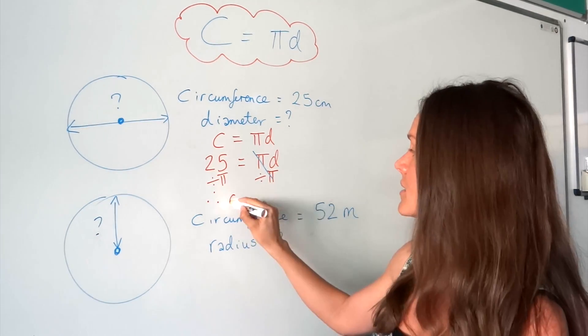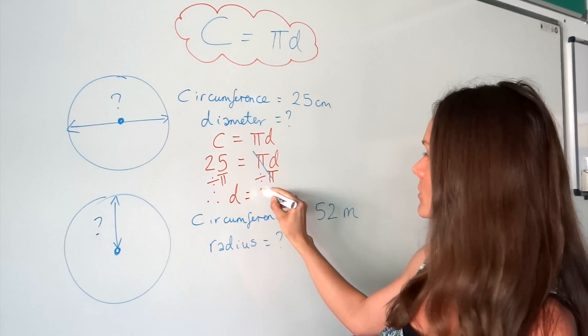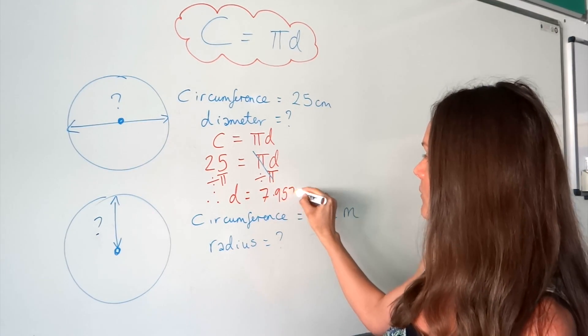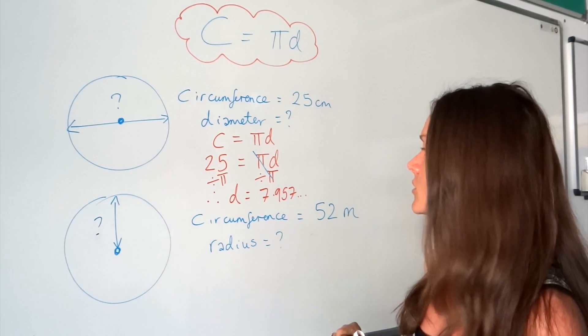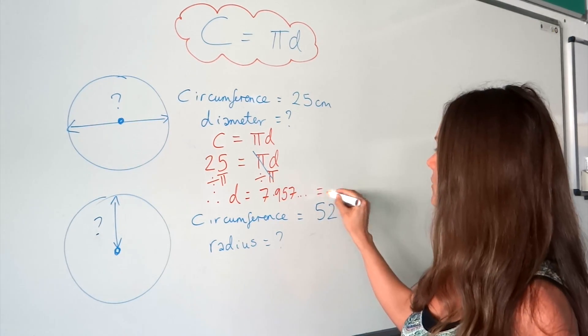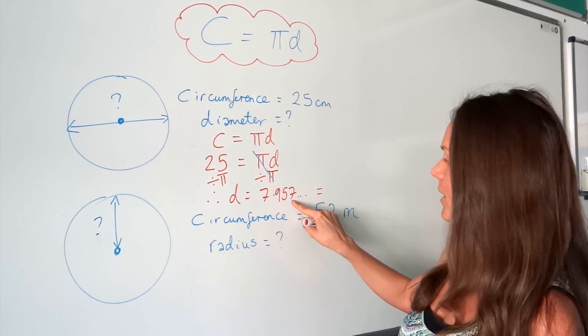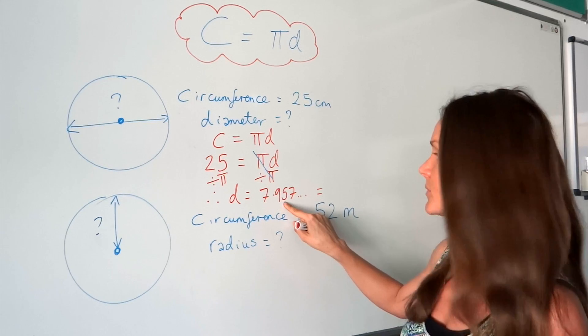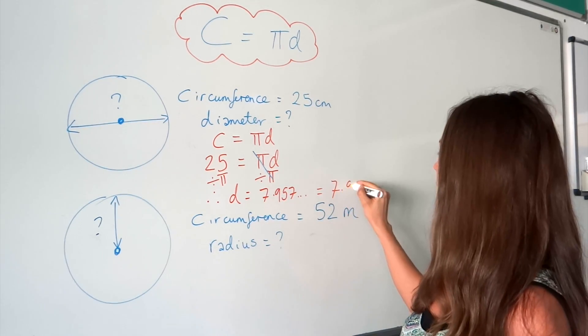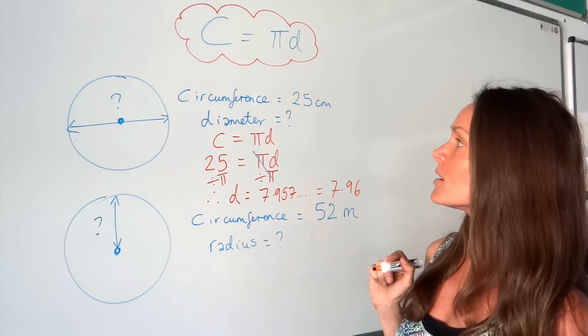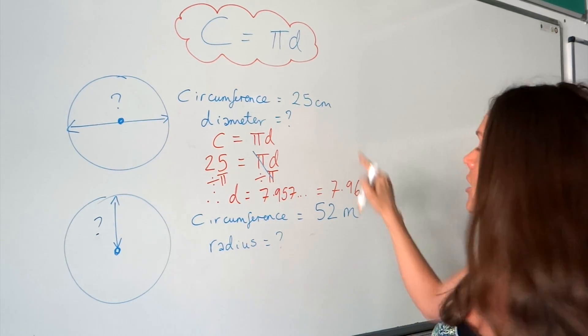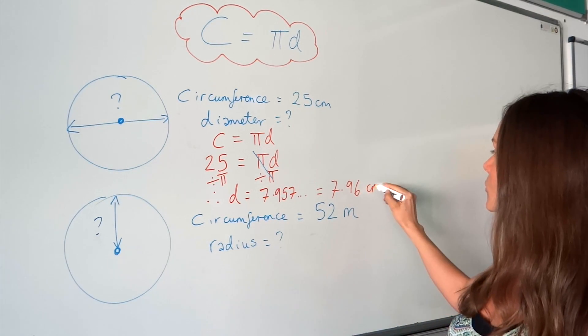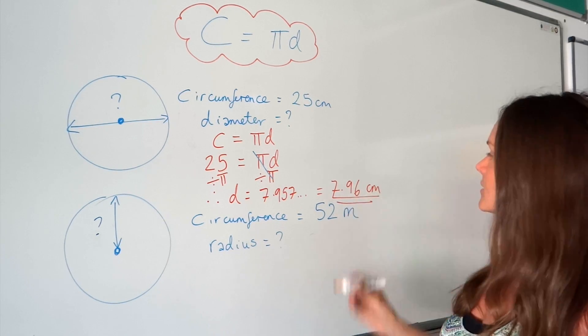That gives me the answer to d. So d equals 7.957... I'm going to round my answer to three significant figures. So I want three numbers in my answer: one, two, three. But that seven rounds the five up to six. So it's 7.96. Remember to include the units - the circumference is given in centimeters, so the diameter is also in centimeters.